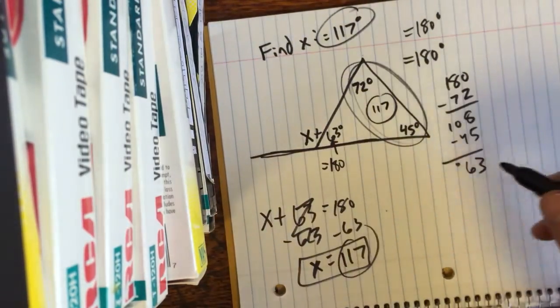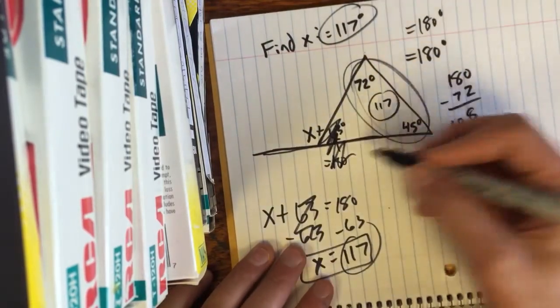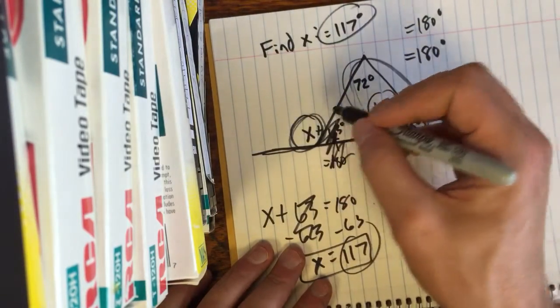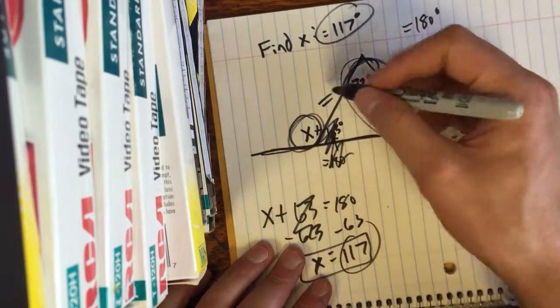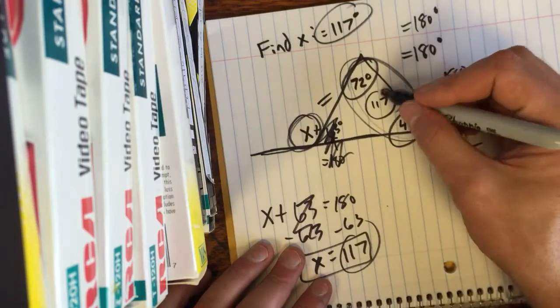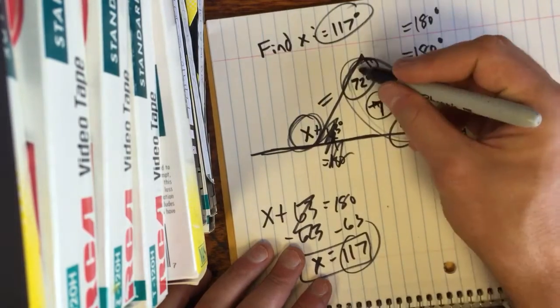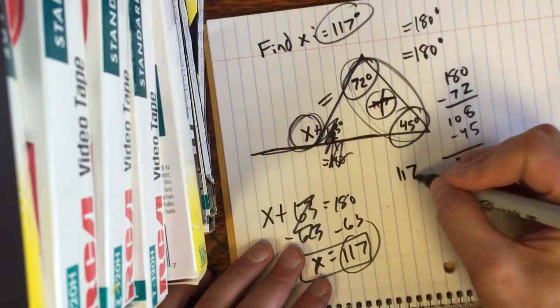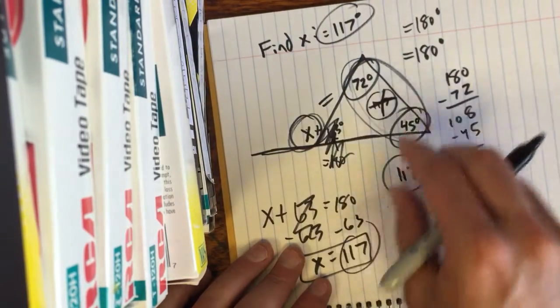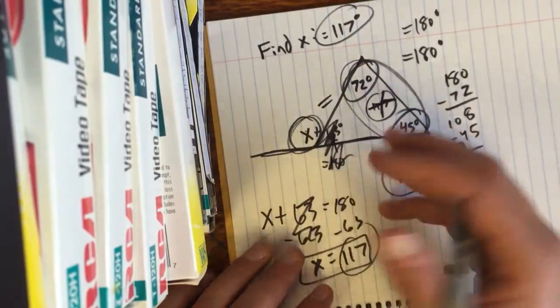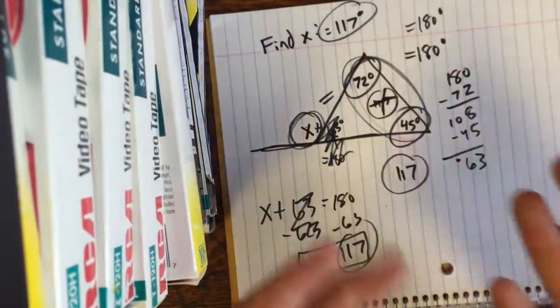So as a shortcut, you don't have to find this angle. Anytime you have an exterior angle of a triangle, it is always going to be equal to these two non-adjacent angles added together. Okay? So what if I just added those two together, I got 117. It's always going to be equal because you're taking out the same thing from this 180 and this 180. So these two are going to be equal. That's it.